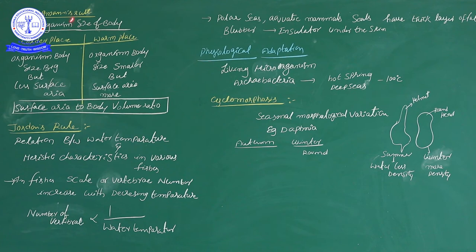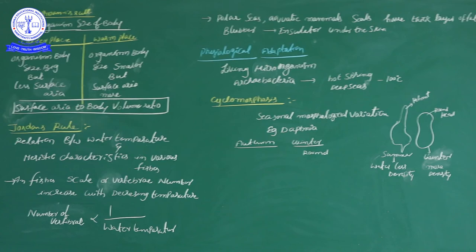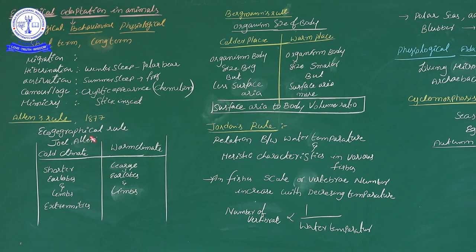Jordan's rule tells about the relation between the number of vertebrates and temperature of water. Bergman's rule tells about the relation between body size and surface area of organisms. Allen's rule tells about extremity size with environmental conditions. These three — Allen's rule, Bergman's rule, and Jordan's rule — are eco-geographical rules, controlled by geographical conditions.